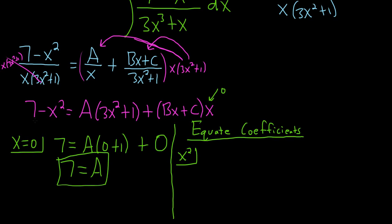So x squared. On the left hand side you look for the coefficient of x squared. So in this case it's negative 1. Then you look at the right hand side. Say okay what are the coefficients of x squared? Well here you're going to get A times 3x squared, so 3A. And then over here you're going to get Bx times x, so Bx squared, so B.